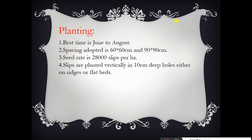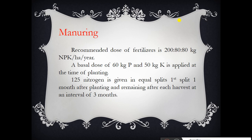The recommended dose of fertilizer for citronella grass is 200:80:80 kg NPK per hectare per year. Basal dose of 60 kg phosphorus and 50 kg potash is applied at the time of planting. Then 125 kg nitrogen is given in equal splits — the first split one month after planting, and the remaining after each harvest at an interval of three months.